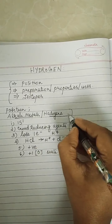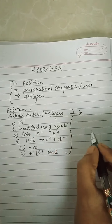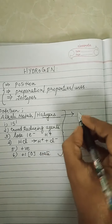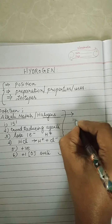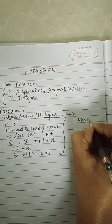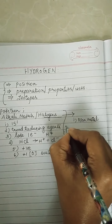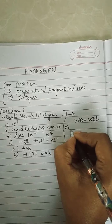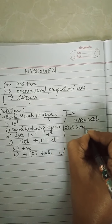Now I am going to list out the properties which tell us that hydrogen is similar to halogens. How does it resemble halogens? First: it is a non-metal — hydrogen is a non-metal, which is the first property showing it resembles halogens. Second property: it is able to form a diatomic molecule, H₂, like Cl₂.